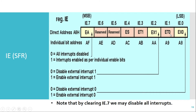ET0 is related to timers and will be covered when studying timers. The EX1 bit is related to external interrupt 1. Whenever this bit is 1, external interrupt 1 is enabled. Whenever this bit is 0, external interrupt 1 is disabled. The MSB bit is related to enabling or disabling all interrupts globally. If this bit is 1, all interrupts that have their individual bits set will be able to generate an interrupt. If this bit is 0, irrespective of the individual interrupt bits, none of the interrupts will be able to generate an interrupt.